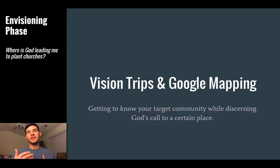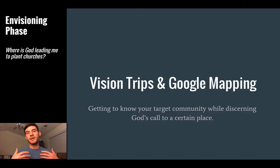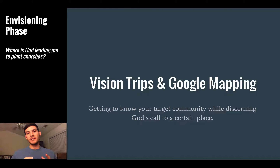With those two combined, this lecture is going to wrap some of that up but also explore another way to discern where God is calling you. I want to talk about the concept of vision trips, and then look at how you can use Google Maps to create a digital version of community mapping. It's important to do both — a digital version and on-the-ground analysis. This whole lecture is really about getting to know your target community while discerning God's call to a certain place.